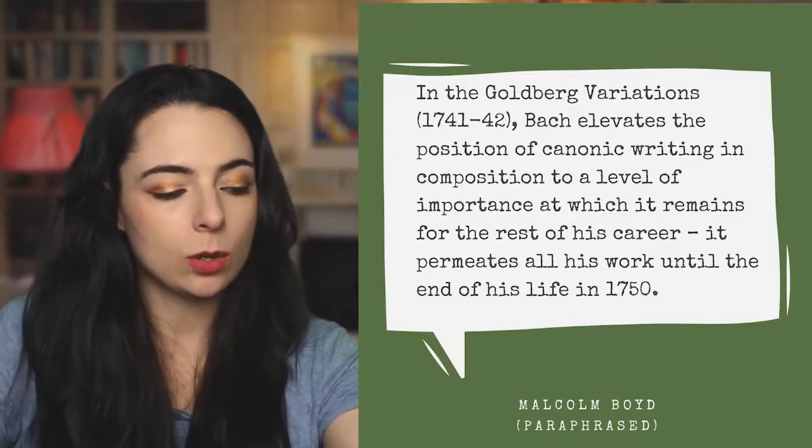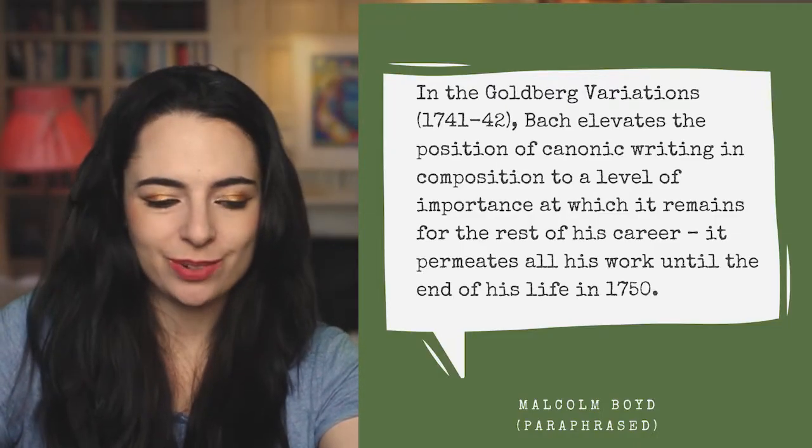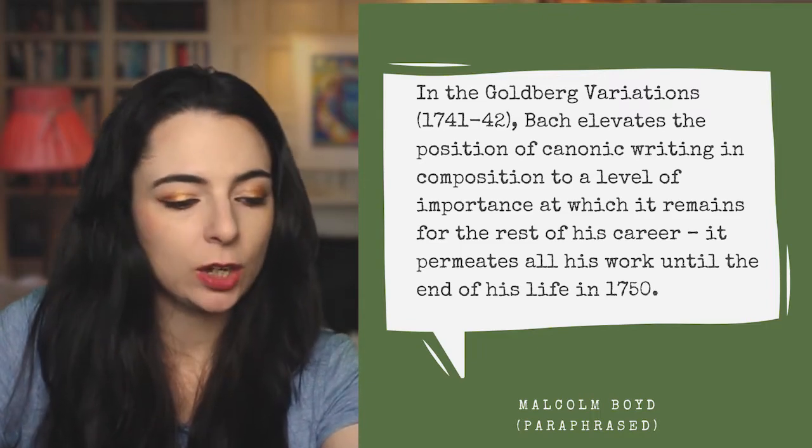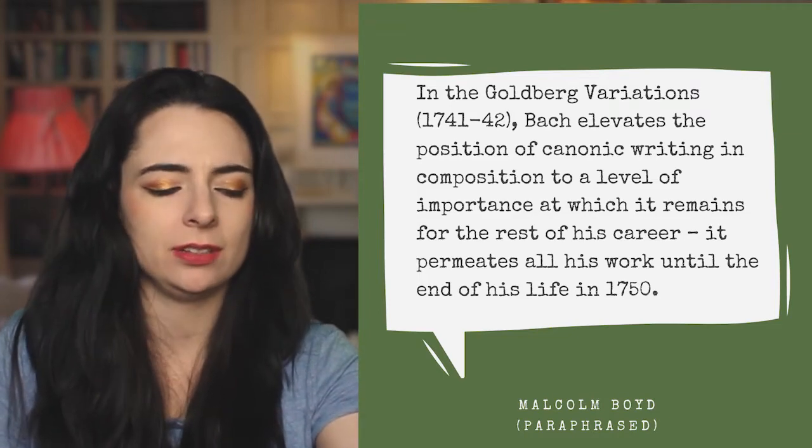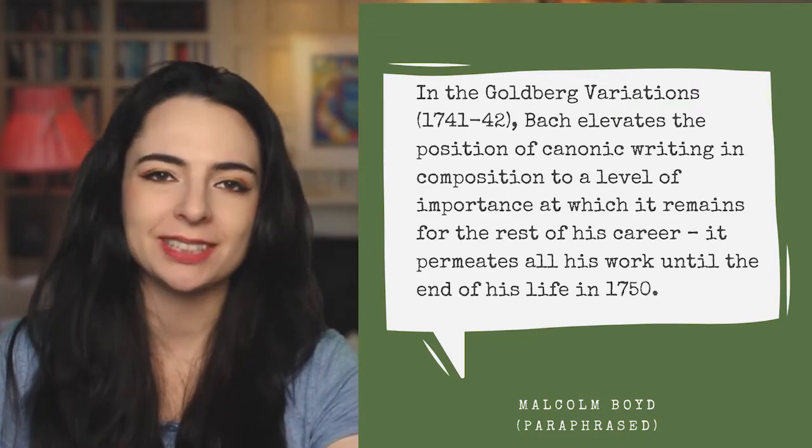The thirtieth variation, rather than being the expected canon at the tenth interval, is instead an ingenious quodlibet — effectively a free-for-all. Quodlibet literally means 'what pleases' in Latin. In Bach it is a mélange of popular tunes and original material permeated by the phrase 'Kraut und Rüben haben mich vertrieben' — basically meaning 'cabbages and turnips have turned me away.' As Malcolm Boyd points out, Bach elevates canonic writing to a level of importance that permeates all his work until his death in 1750.